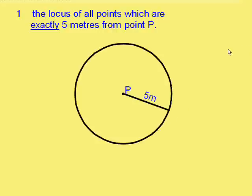In fact, all of them is a circle which has a radius of 5m. So that line, the circle, is the locus of all points which are exactly 5m from P. All the points on the circle obey the rule that they are 5m from P.